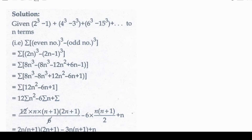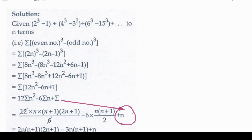We need to get the summation of this term. So, summation of 12n² minus 6n plus 1. This gives us the summation expression step by step. Summation of 1 contributes n, and summation of n gives n(n+1)/2. The summation of n squared uses the formula n(n+1)(2n+1)/6.